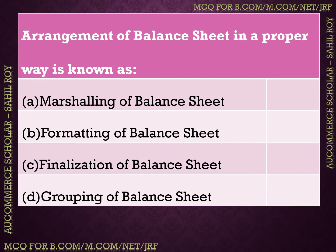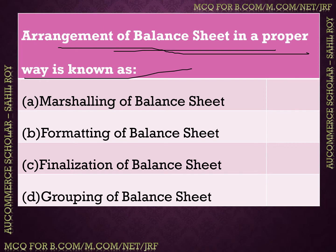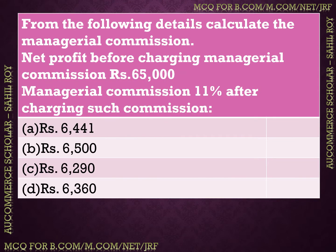The next question is: arrangement of a balance sheet in a proper way is known as what? We have four options: (A) marshalling of balance sheet, (B) formatting of balance sheet, (C) finalizing of balance sheet, (D) grouping of balance sheet. The correct answer is Option A — marshalling of balance sheet. When we arrange our balance sheet in a proper way, it is called marshalling of balance sheet.